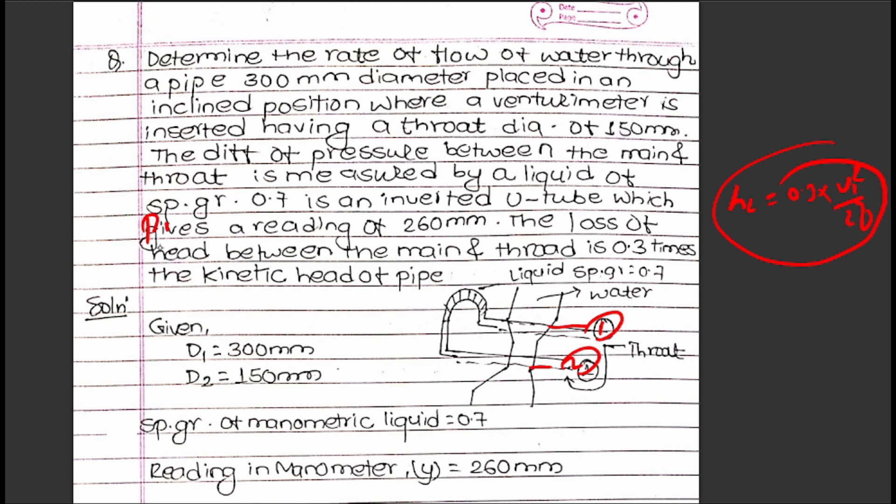Applying Bernoulli's equation: P₁/γ + V₁²/2g + z₁ = P₂/γ + V₂²/2g + z₂ + h_l, where the head loss is 0.3V₁²/2g.